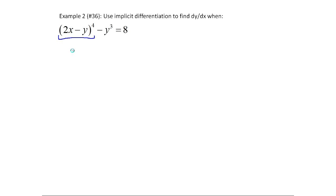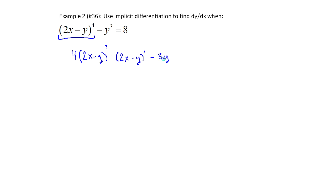For this first term I apply the chain rule: that's 4(2x - y)³, and then I multiply by the derivative of the inside because I took the derivative of the outside function. So I multiply by (2x - y)', which we'll figure out in a minute. Then up here I hit -y³. If this were a normal function, that'd be -3y², but we don't know what y is in terms of x, so I use the chain rule and multiply by y prime. And finally, the derivative of 8 is 0, so this equals 0.